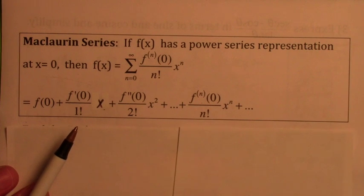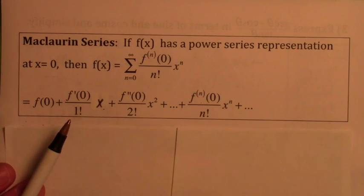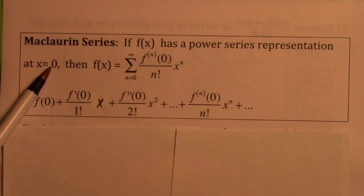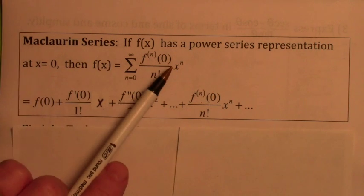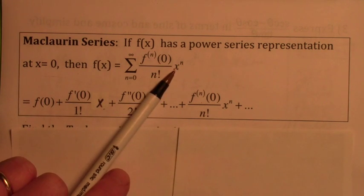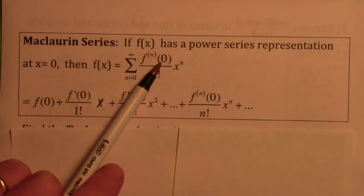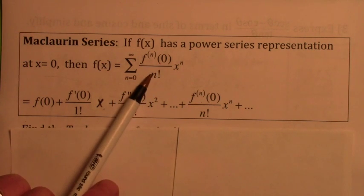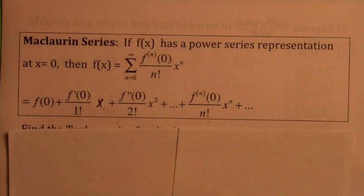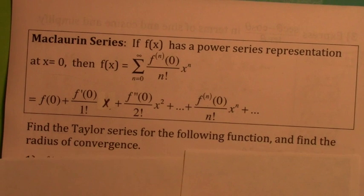It's a little more simple if you look at x equals 0. It's the same exact thing, but instead of x minus a you just have x to the n, that is x minus 0 to the n. And instead of the nth derivative at a, you have the nth derivative at 0. So this would be the power series representation at x equals 0. It's called the Maclaurin series.